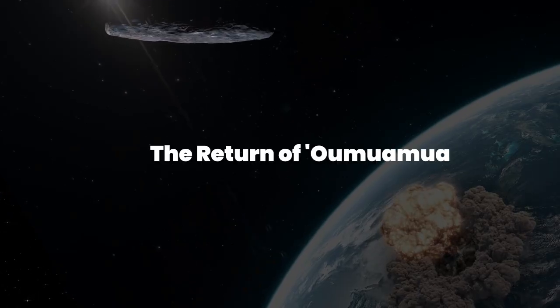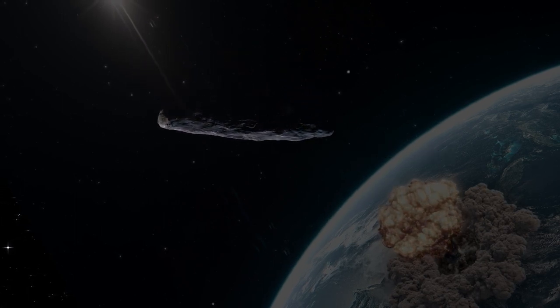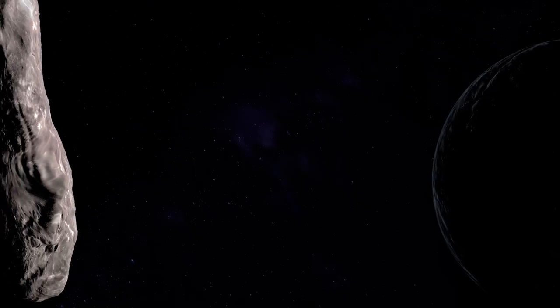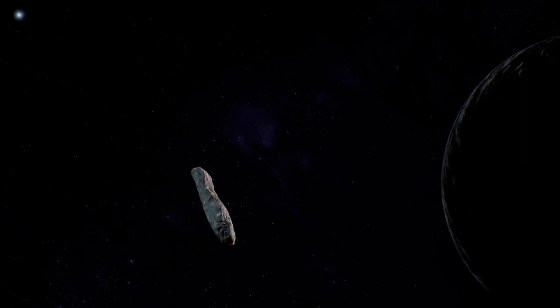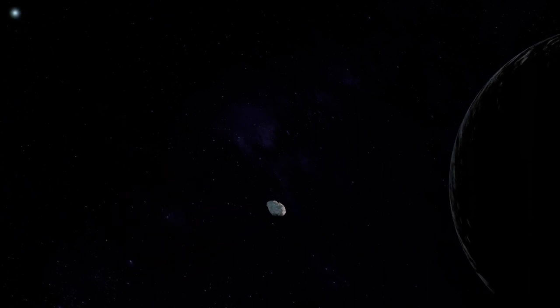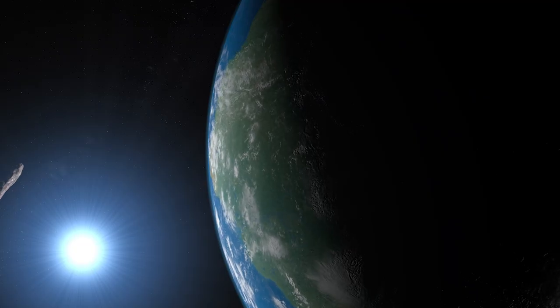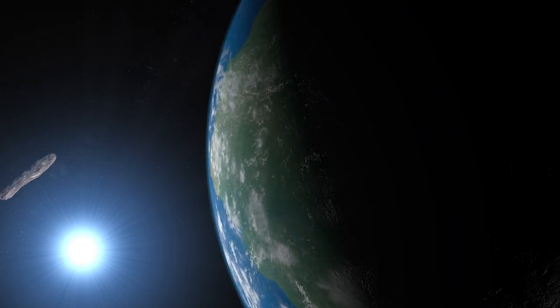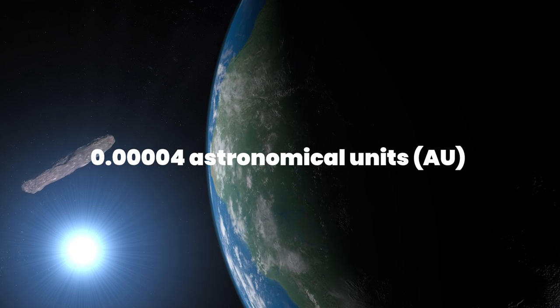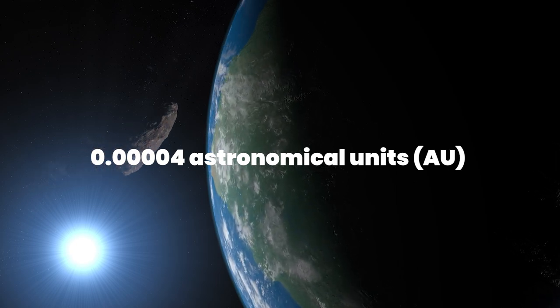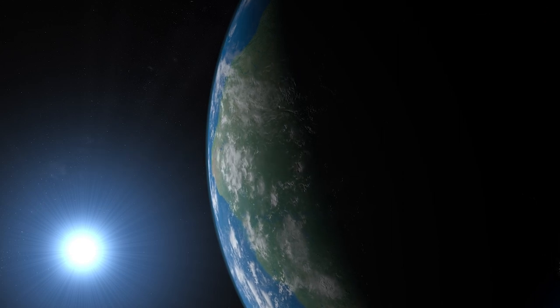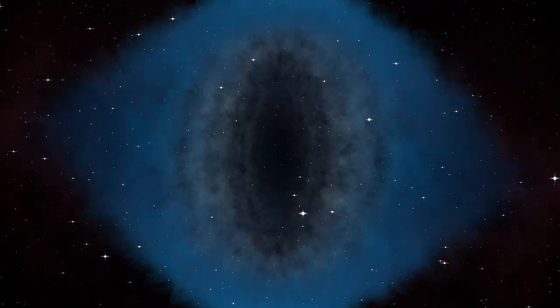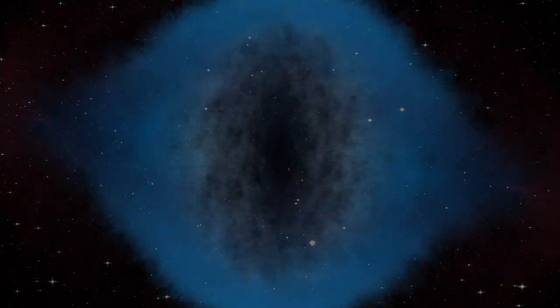The return of Oumuamua. Cliff Walker, an astronomer studying Oumuamua, has made an astonishing discovery. Oumuamua is returning to our solar system, and this time it's heading closer to Earth. It's estimated to pass within 0.0404 astronomical units of our planet. That's incredibly close. But the story doesn't end there.